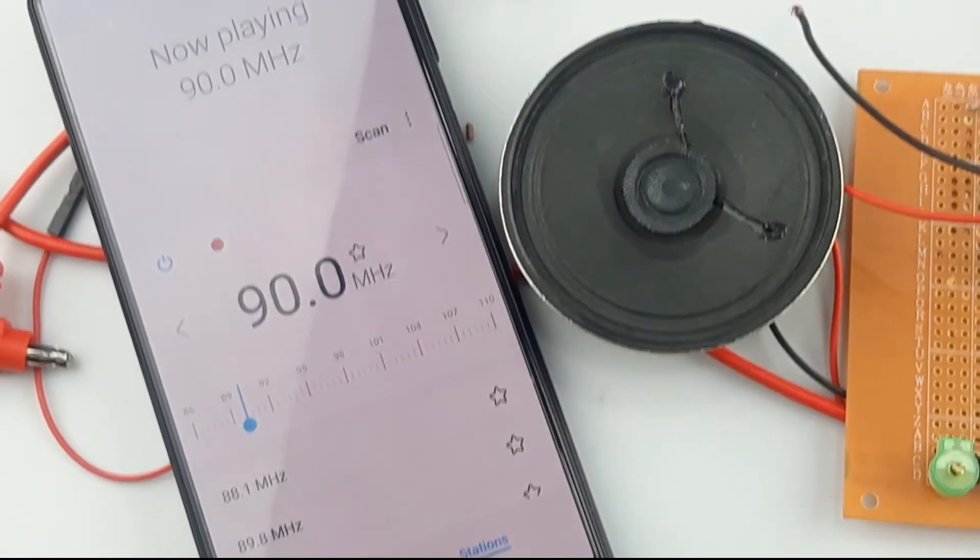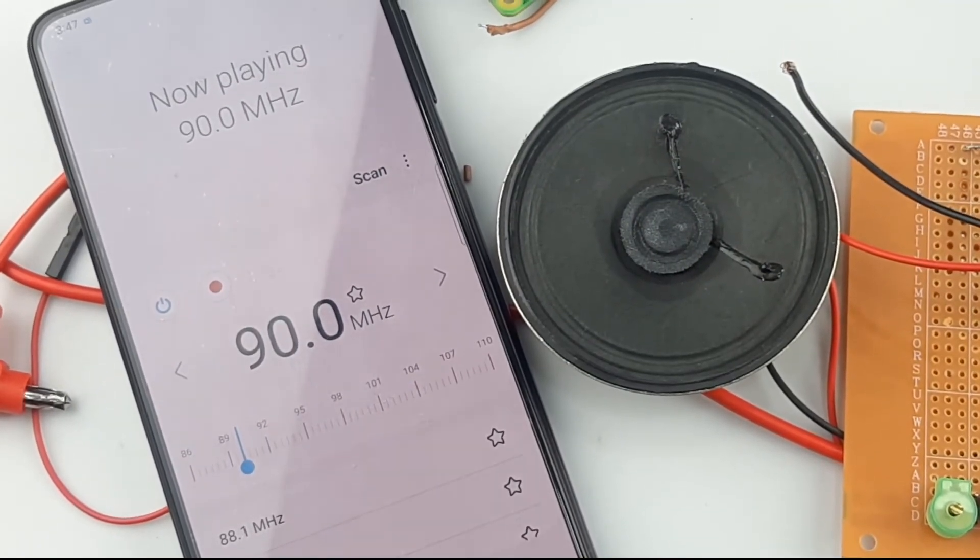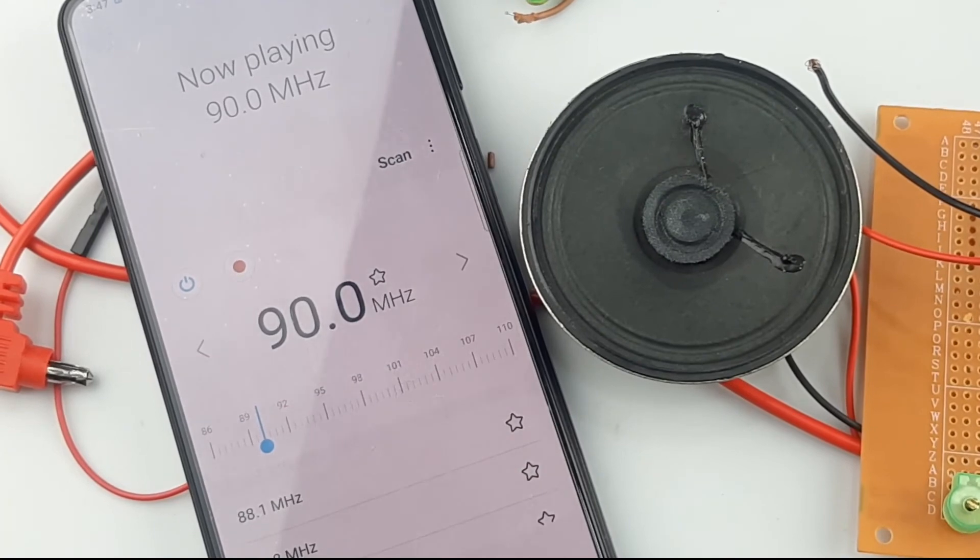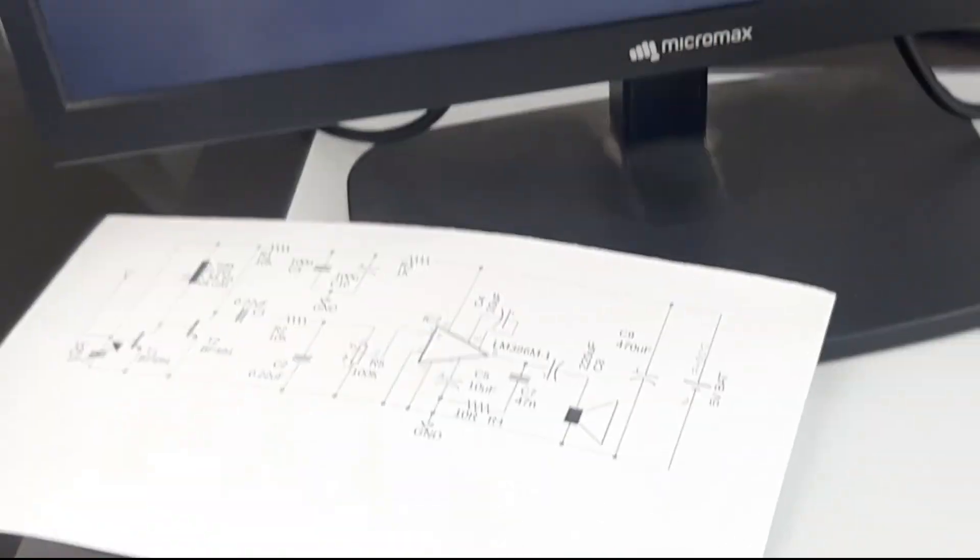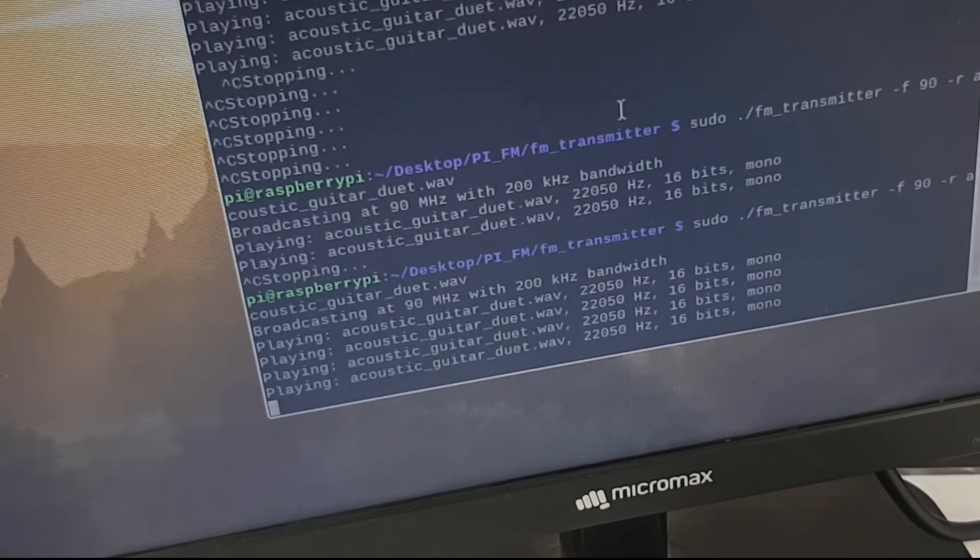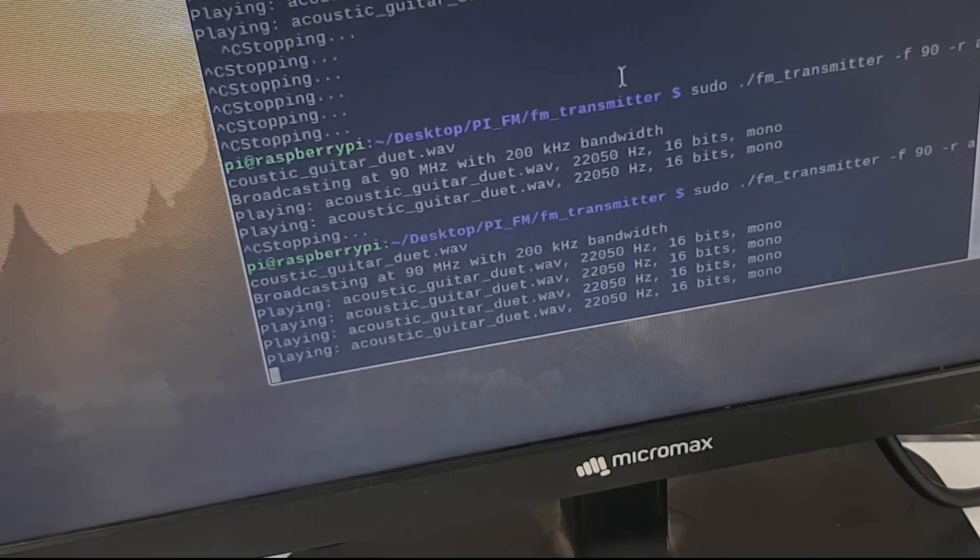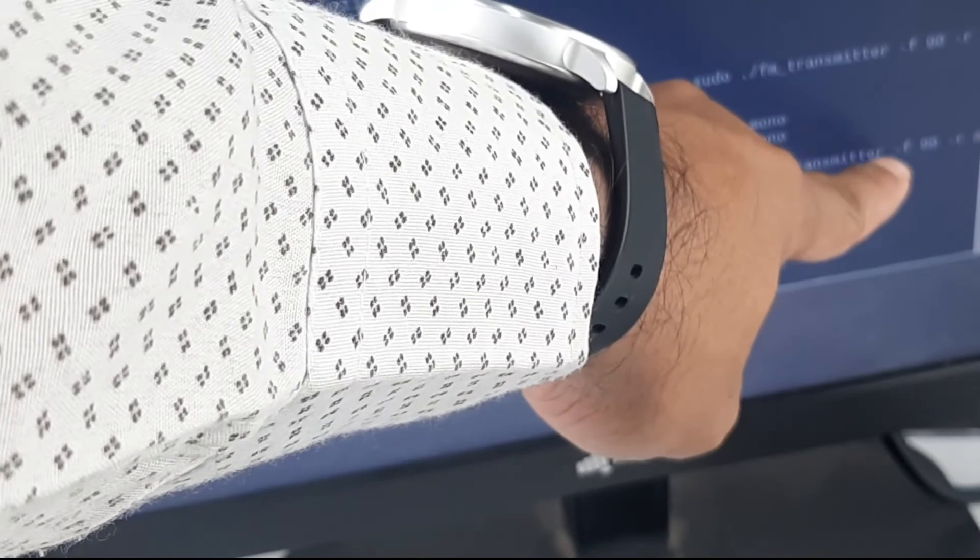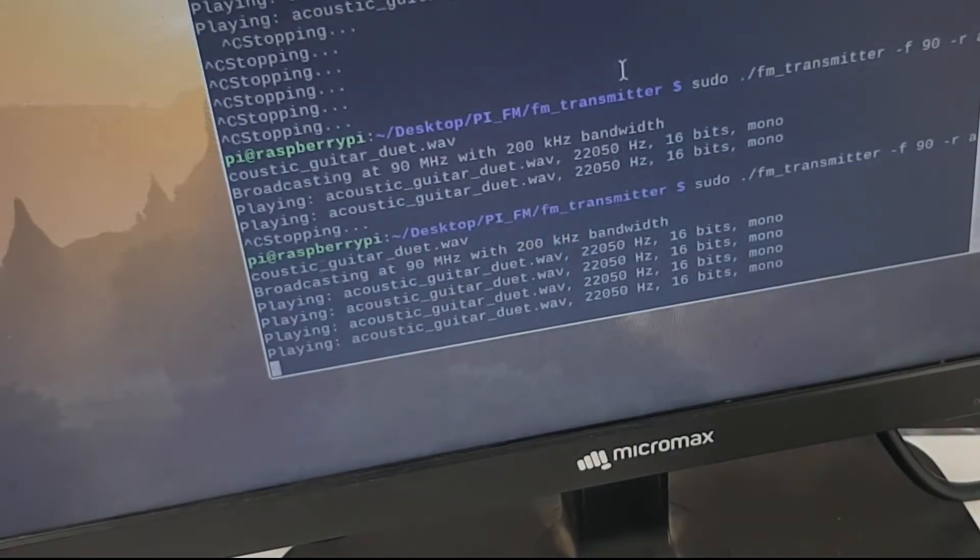Now, as you can see, I have tuned this radio to the exact frequency which I set for the FM radio receiver, which is 90 hertz. You may or may not see this is the frequency which I have set right here.